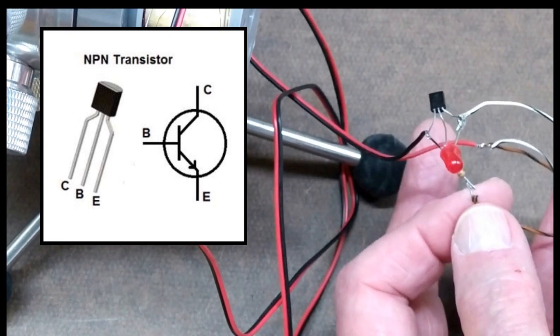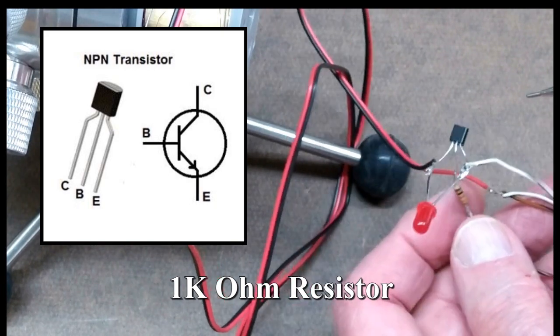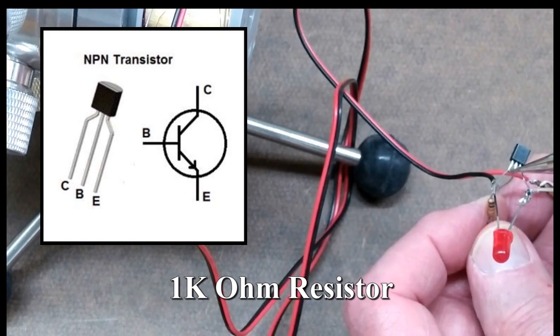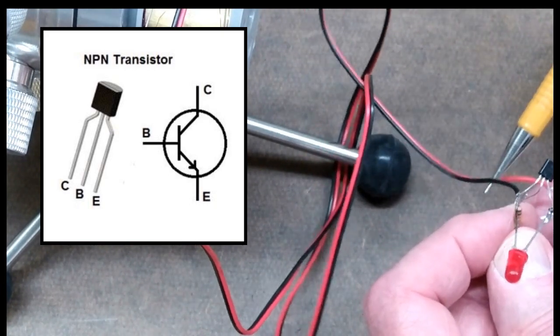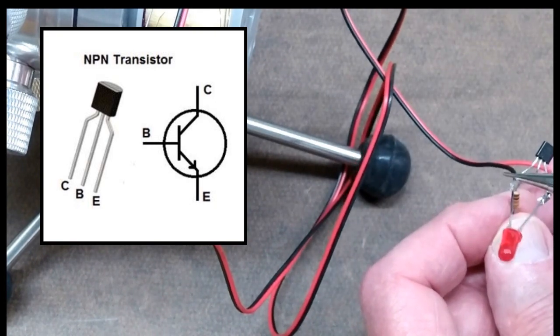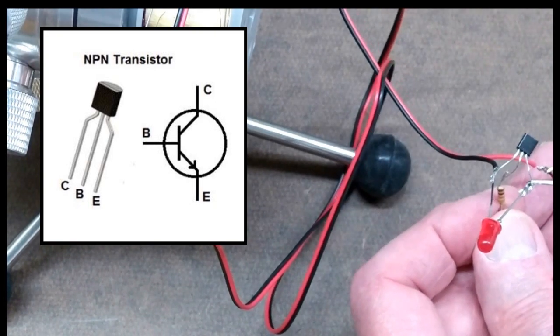The remaining end from the toroid goes to a 1k resistor and is connected to the base. Then the negative from the generator goes to the emitter and the negative side of the LED.